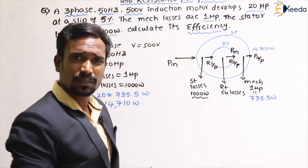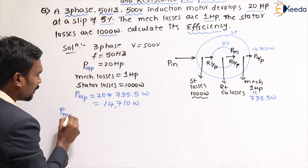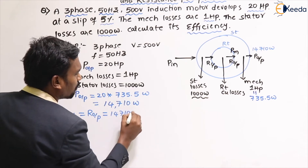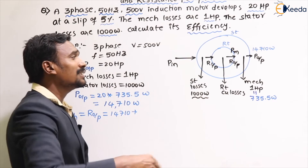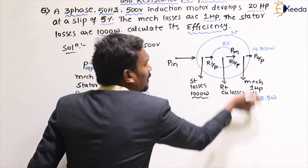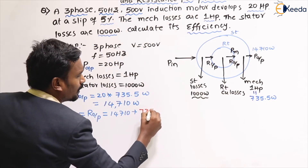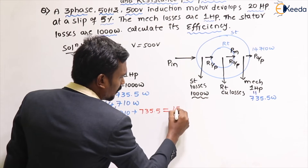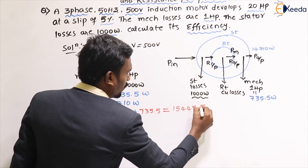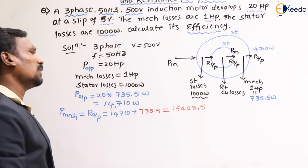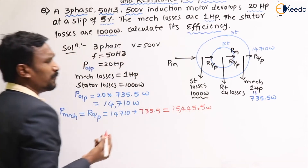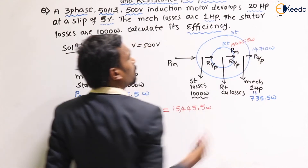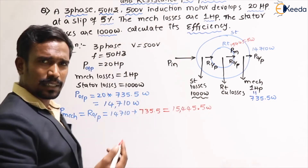The rotor output is the mechanical power developed by the machine. Rotor output equals power output plus mechanical losses: 14,710 + 735.5 = 15,445.5 watts. This is the mechanical power developed by the machine.